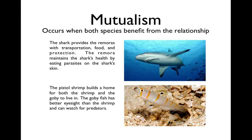Mutualism occurs when both species benefit. An example is sharks and remoras. Remoras are little fish that attach themselves to the shark — they get transportation, food, and protection. The remora also maintains the shark's health because it eats parasites on the shark's skin, so both are clearly benefiting. Another example: the pistol shrimp builds a home for both the shrimp and the goby fish. The goby has better eyesight and can watch for predators, warning the shrimp when something's coming — so both are benefiting.